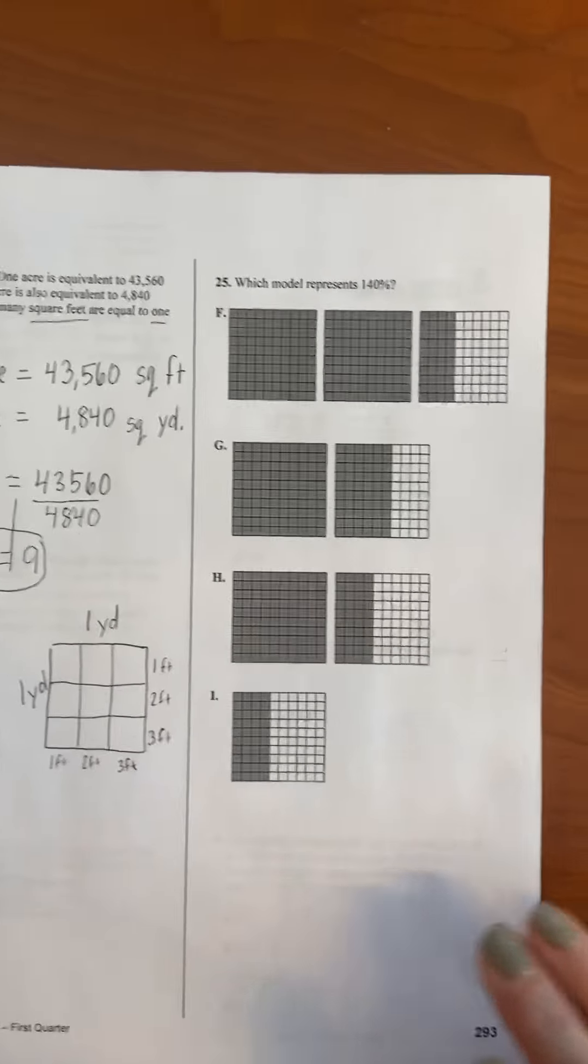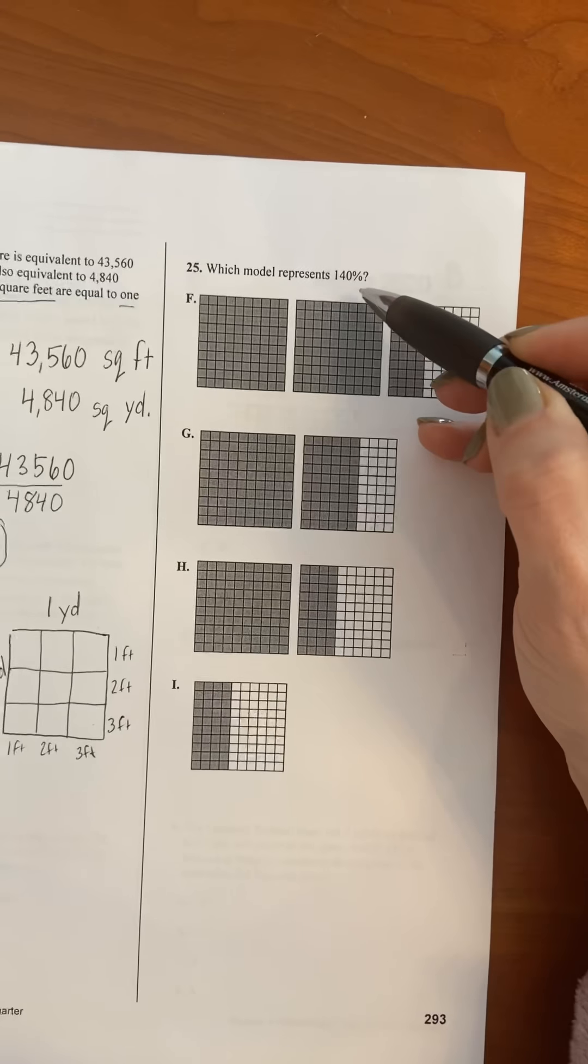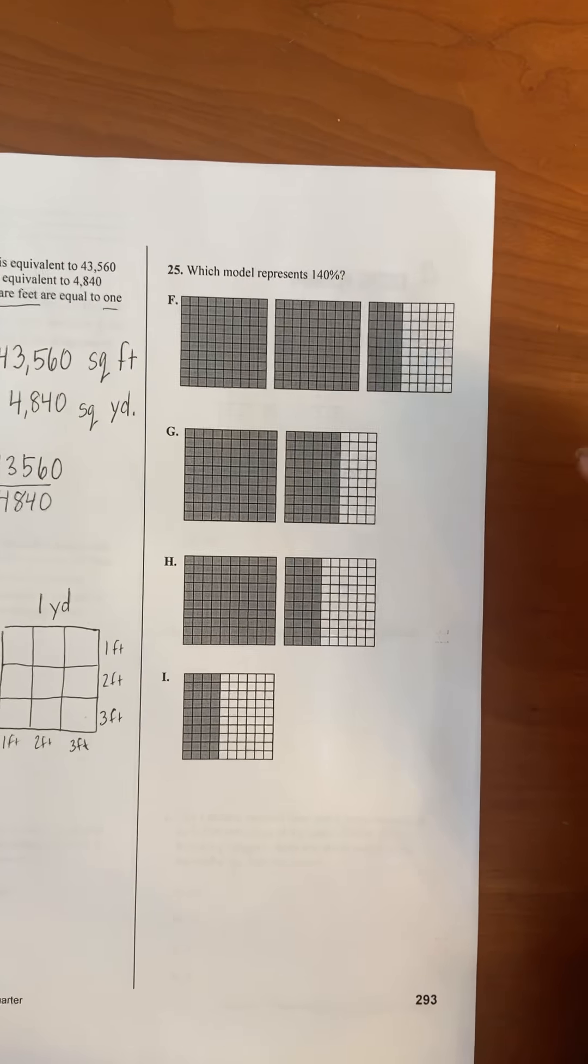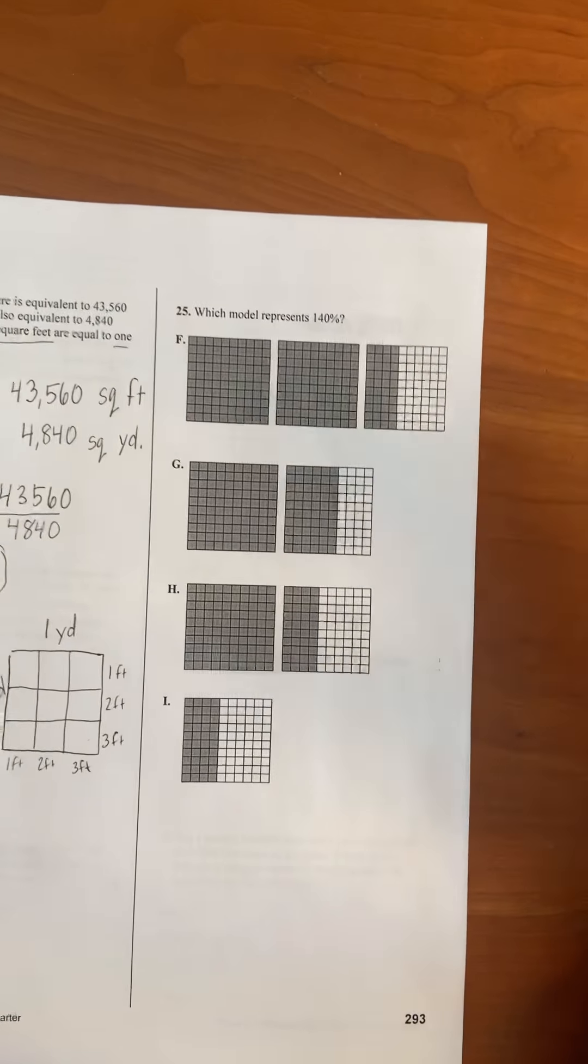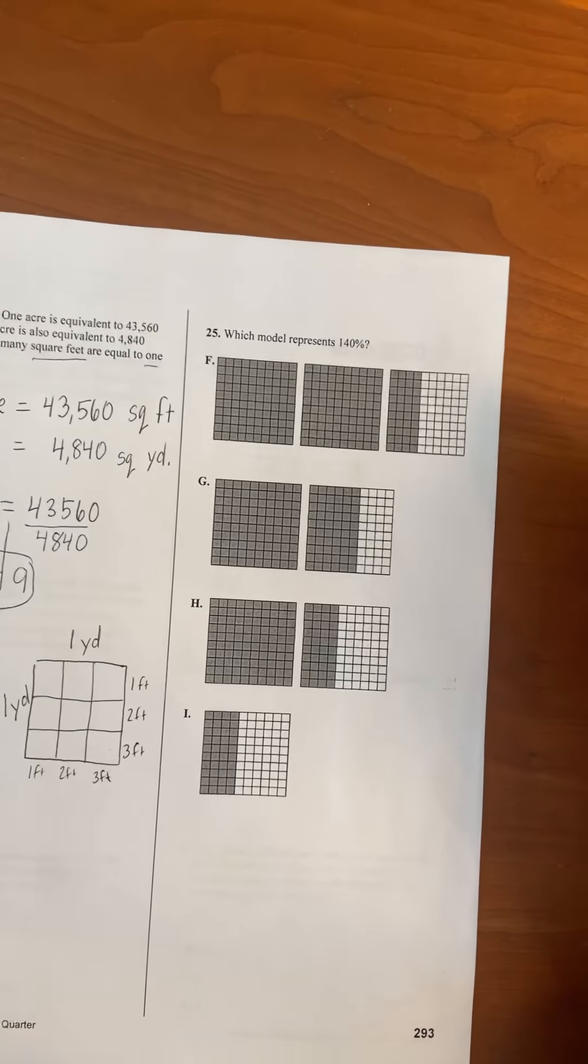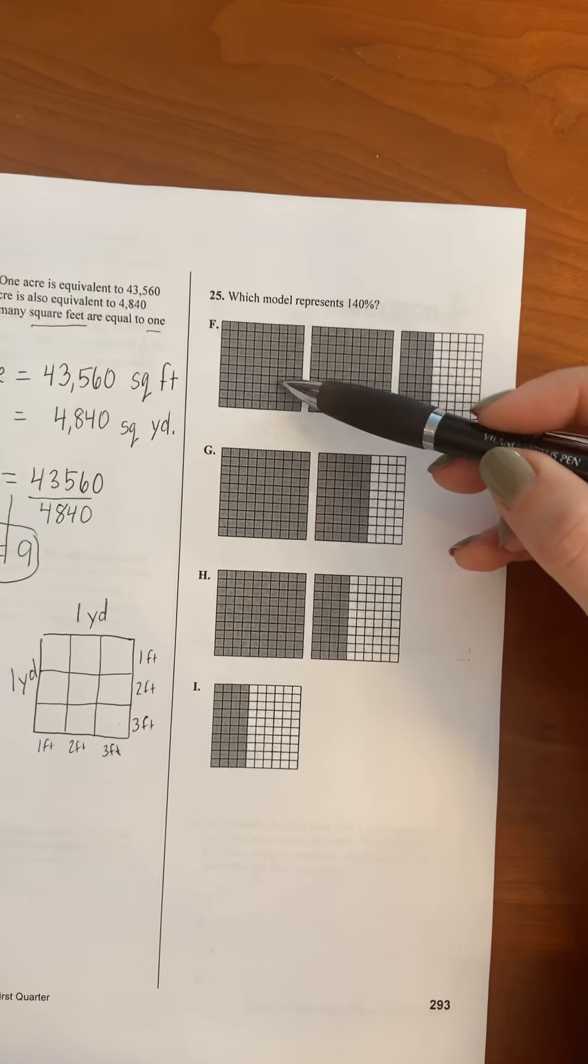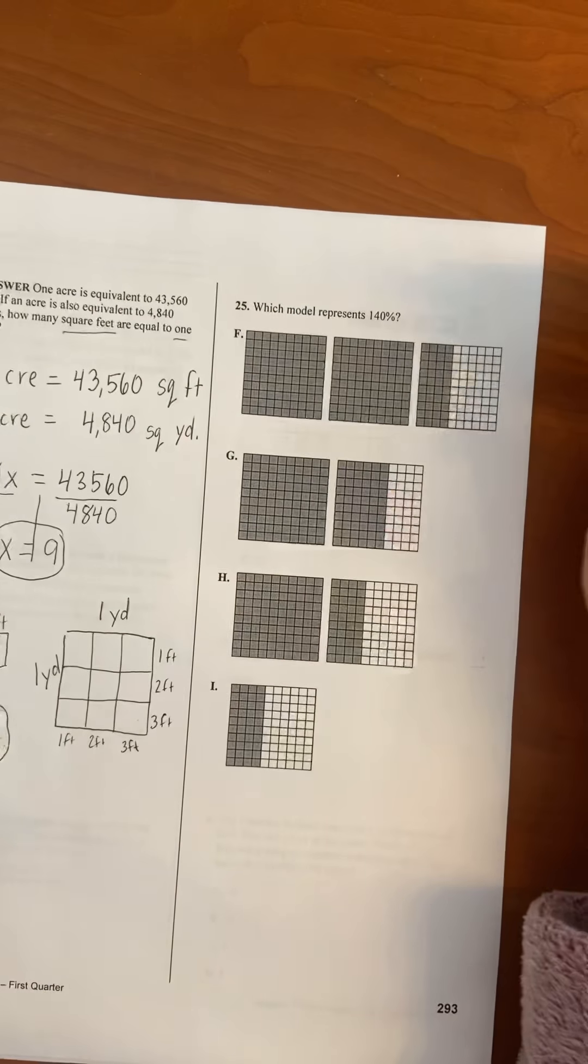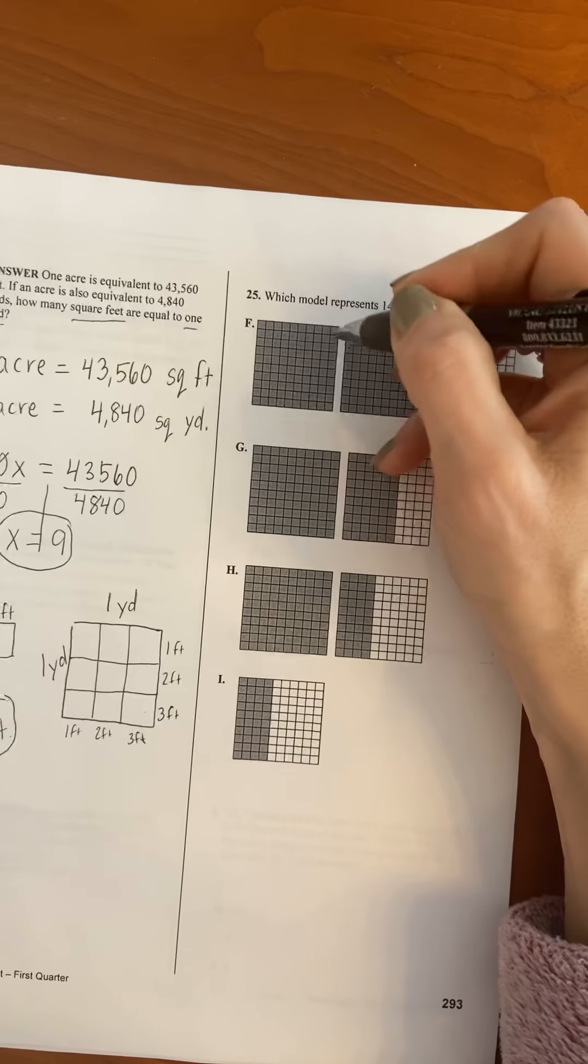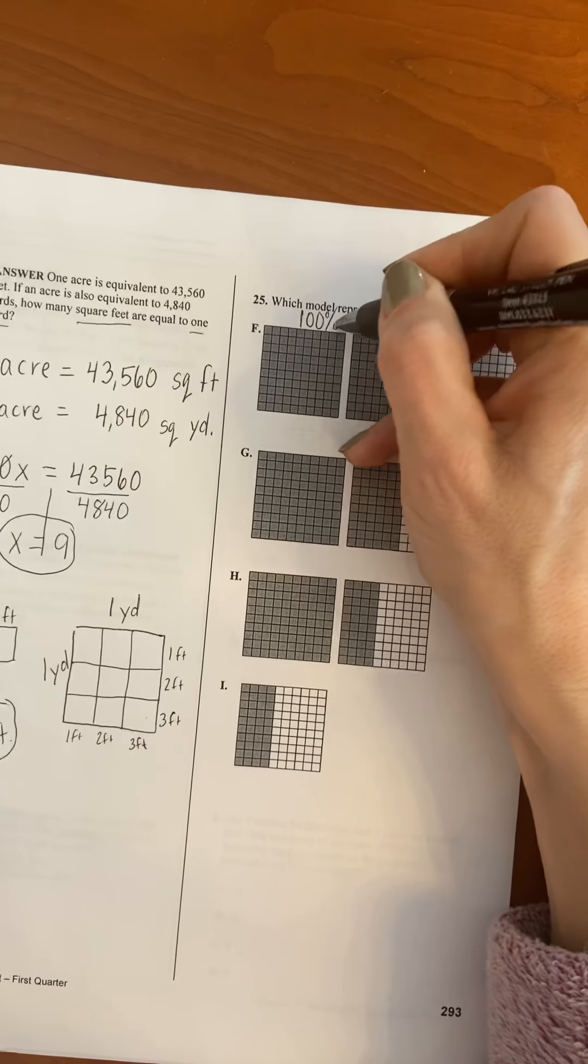For this next question they're asking you to find a model that represents 140 percent. So 100 percent is one whole. 100 percent is the entire object, whatever it is that you're looking at. So when I look at this first one, letter F, this is an entire box, right? An entire square. It's divided up into a hundred little pieces. And so this is 100 percent.